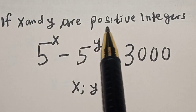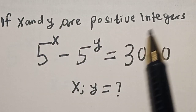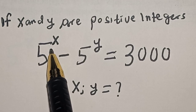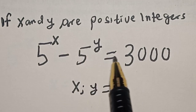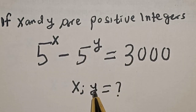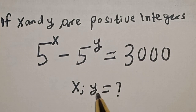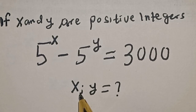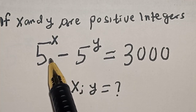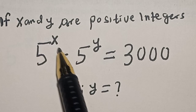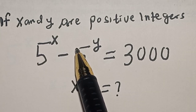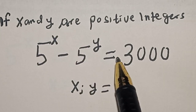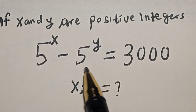If x and y are positive integers and 5 raised to power x minus 5 raised to power y is equal to 3,000, what is the value of x and y? Welcome to my class. In this class, we want to find the value of x and y from this given equation: 5 raised to power x minus 5 raised to power y is equal to 3,000.